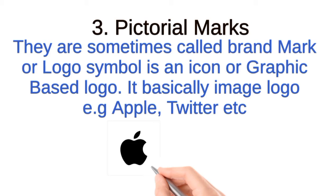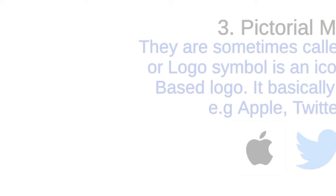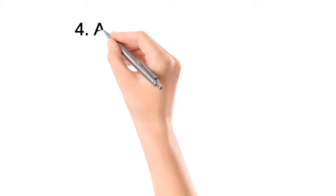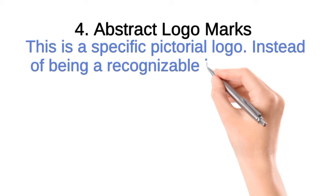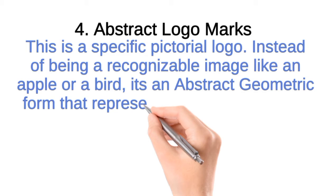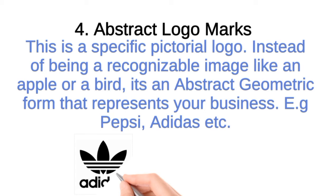Number four, we have abstract logo marks. These are a specific type of pictorial logo — instead of being a recognizable image like an apple or a bird, it is an abstract geometric form that represents your business. Examples here include Pepsi and Adidas; they contain an abstract image along with the company name.